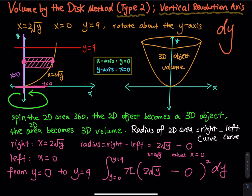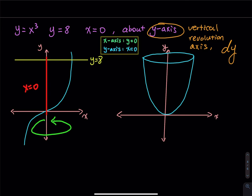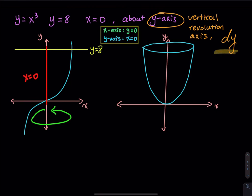Let's move to Example 2. We have y = x³, y = 8, and x = 0, rotated about the y-axis. Since it's a vertical revolution axis, this is a dy problem. But we have x in the function y = x³, and we cannot have x anywhere in the integrand — so we need to fix that.